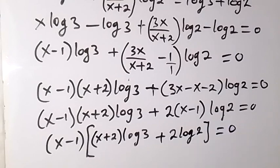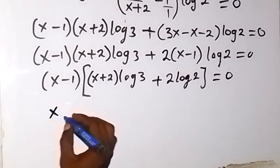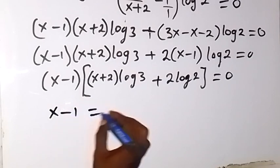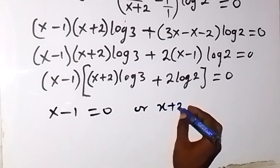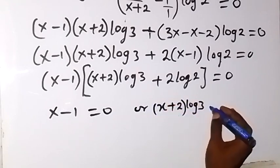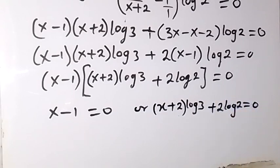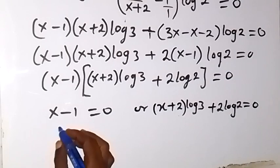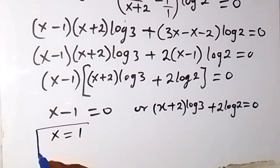Since two numbers multiply to give 0, we can equate x minus 1 to 0, which gives x equals 1. So x equals 1 is the first solution.